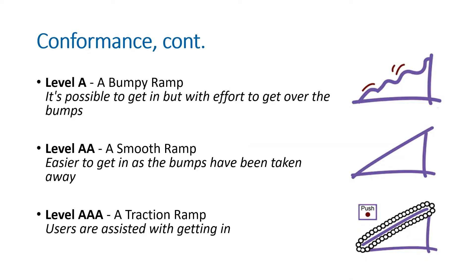To help understand the levels of compliance a bit further, think of your website or application as a ramp. At Level A, the ramp is bumpy — it is possible to get up it, but it takes significant effort to get over the bumps. Level AA means these bumps have been removed and you can quite easily get up to the top of the ramp. Finally, Level AAA means the ramp assists you with getting to the top.